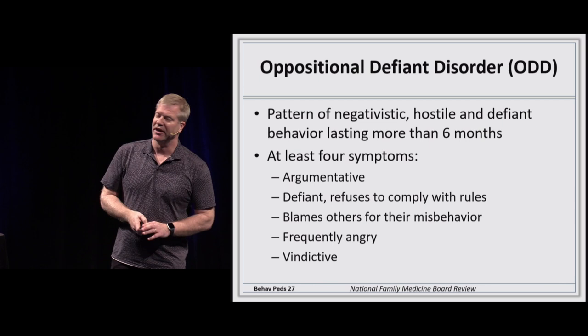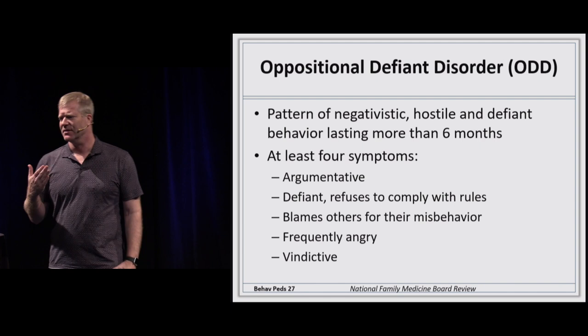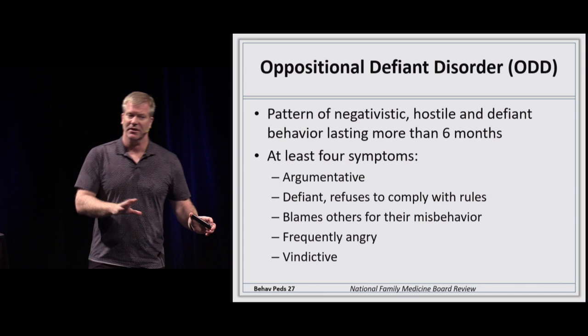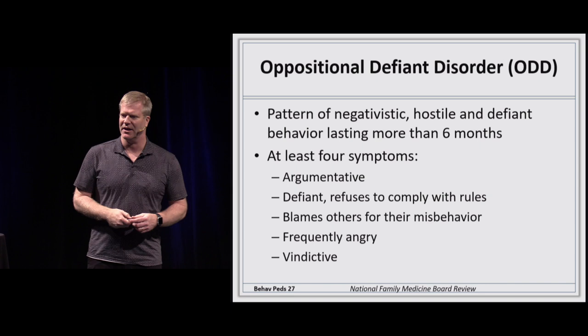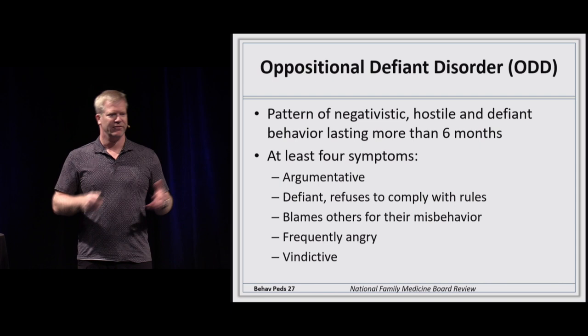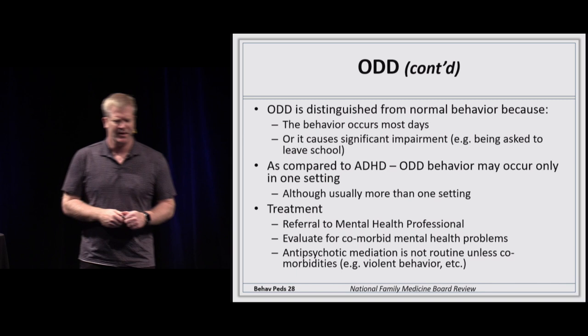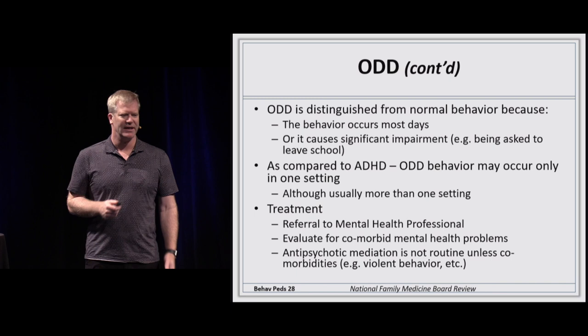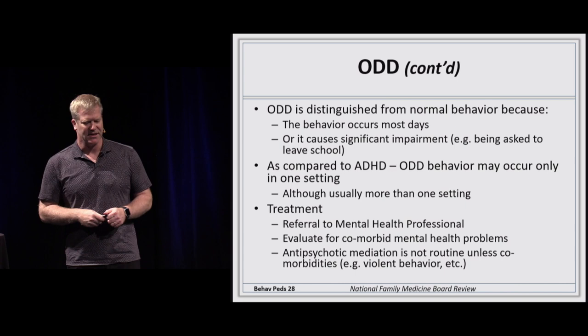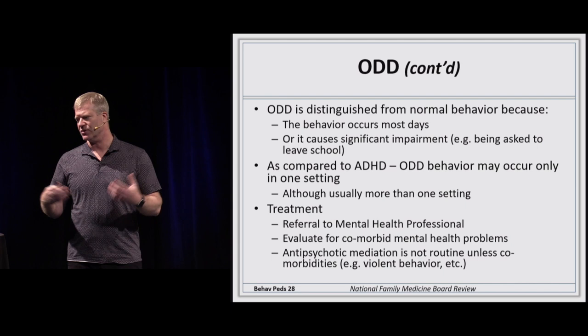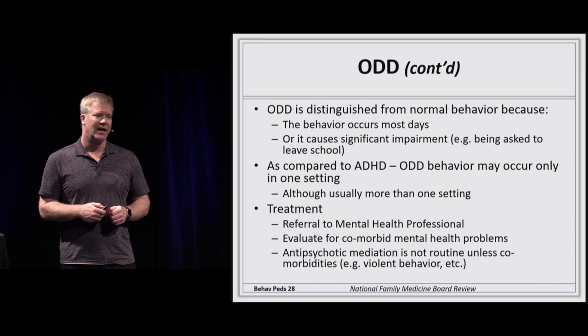ODD behavior is usually aggressive but must persist for a certain length of time — it can't just be a reaction to a stressor. The child is frequently angry and vindictive. To distinguish it from normal behavior, it must occur most days, persist for months, and be present across most settings. Mental health professionals and possibly medications are needed to help manage the aggressive behavior.